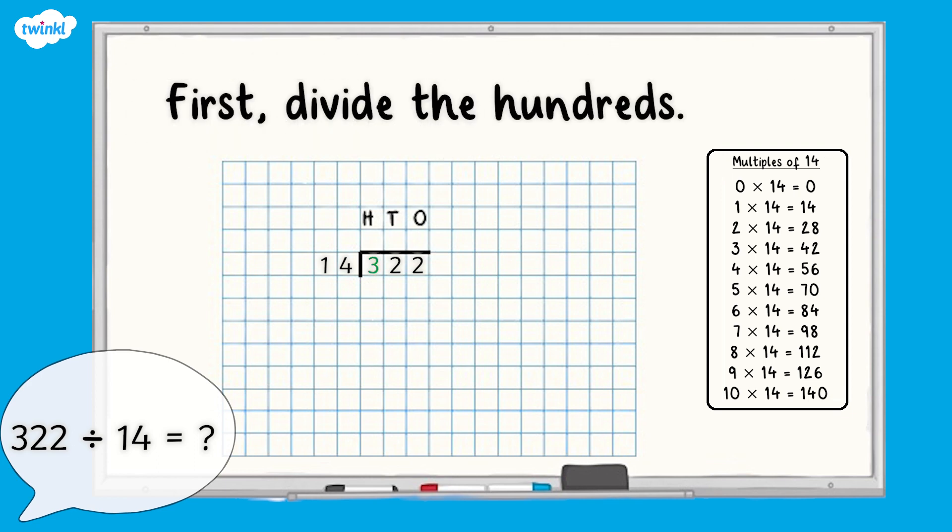First divide the hundreds. Three hundreds divided by 14 equals zero hundreds with three hundreds still remaining. We do not need to write a zero in our answer because we don't use leading zeros in whole numbers. We subtract the zero hundreds we have already divided from the three hundreds that we started with, which leaves us with three hundreds.